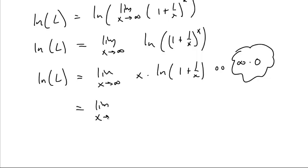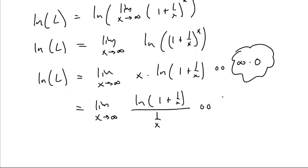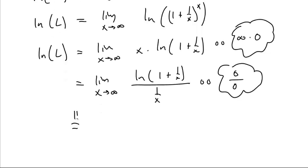This is one of those things that we will rearrange. What's inside the natural log is going to zero. We leave the natural log of one plus one over x in the numerator and put one over x in the denominator, because now as x goes to infinity: one plus zero goes to one, the natural log of one is zero, and one over infinity goes to zero. We have a zero over zero case where we can use L'Hôpital's rule.